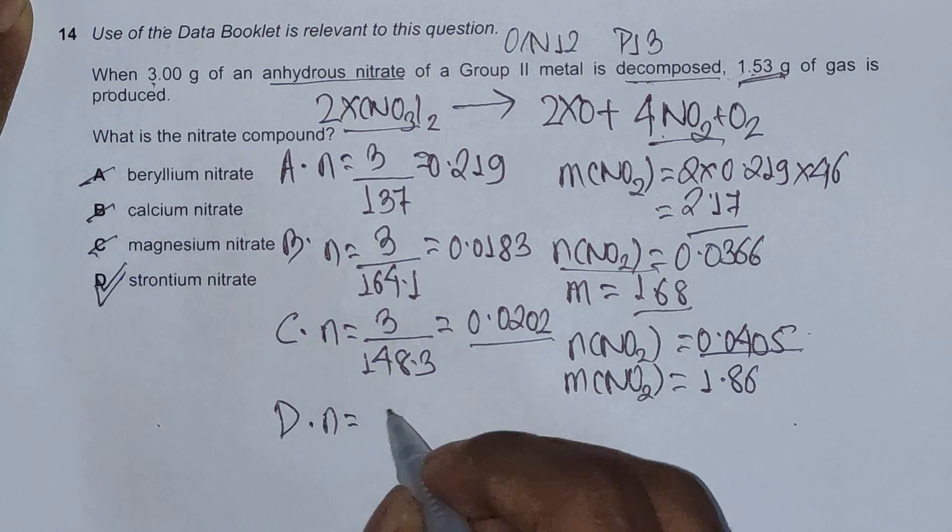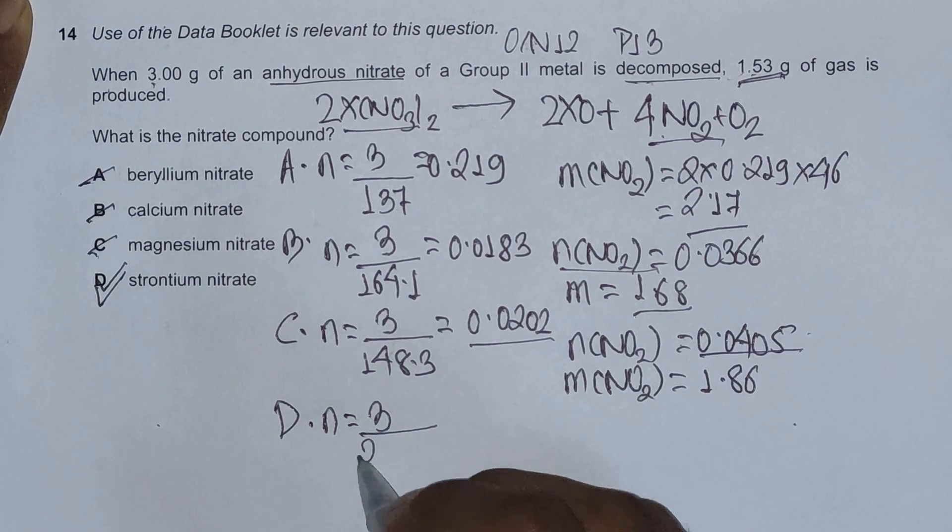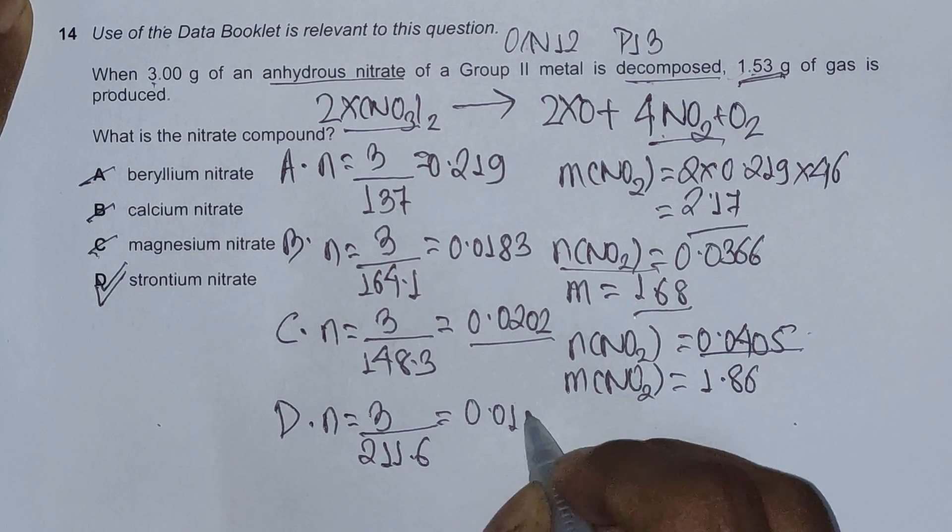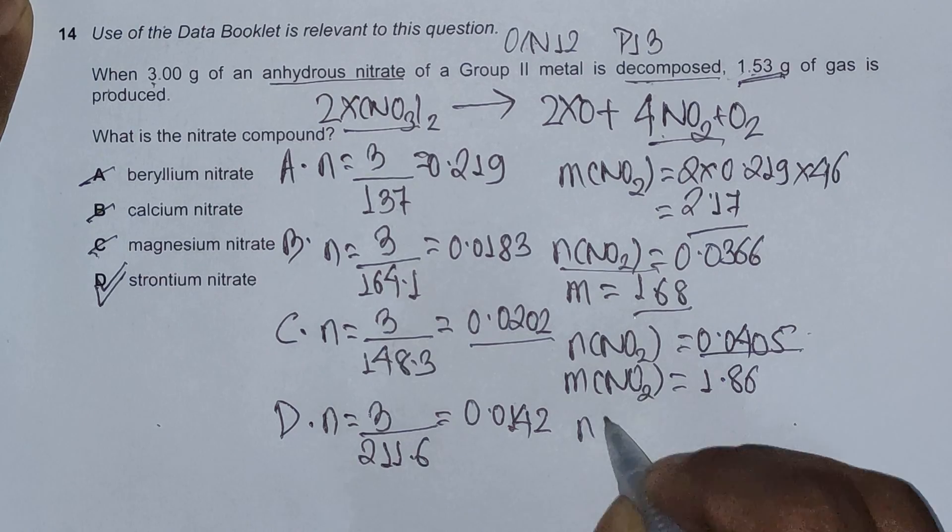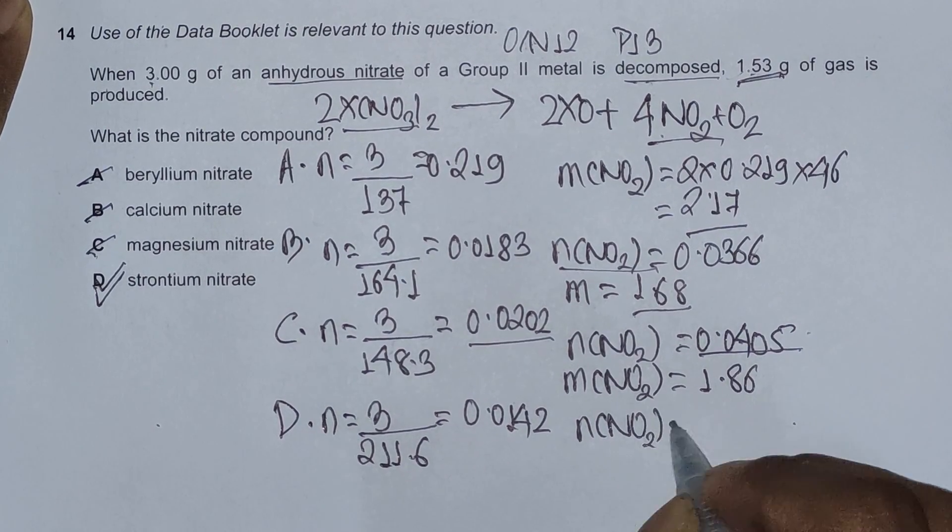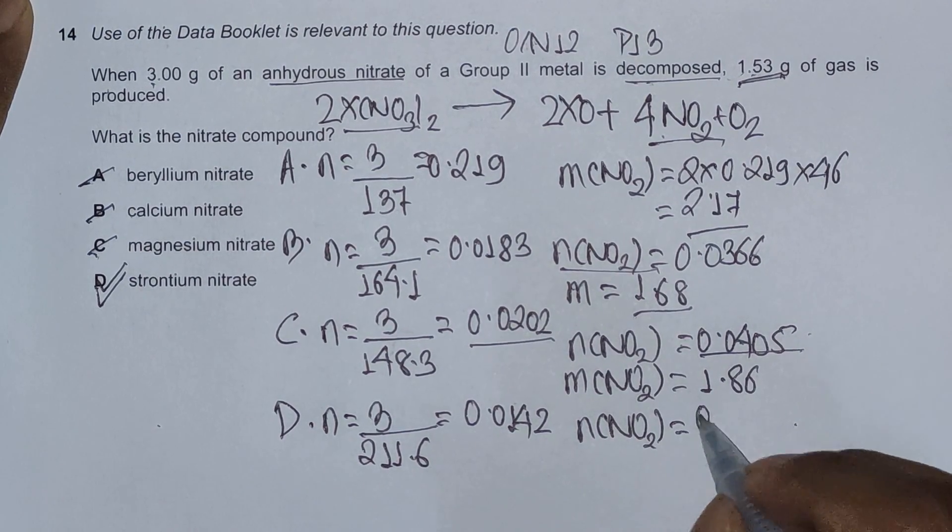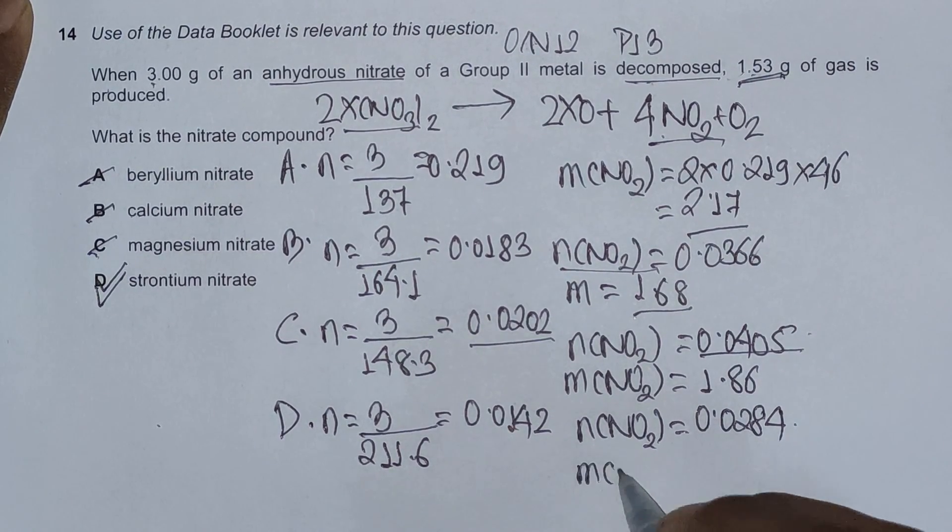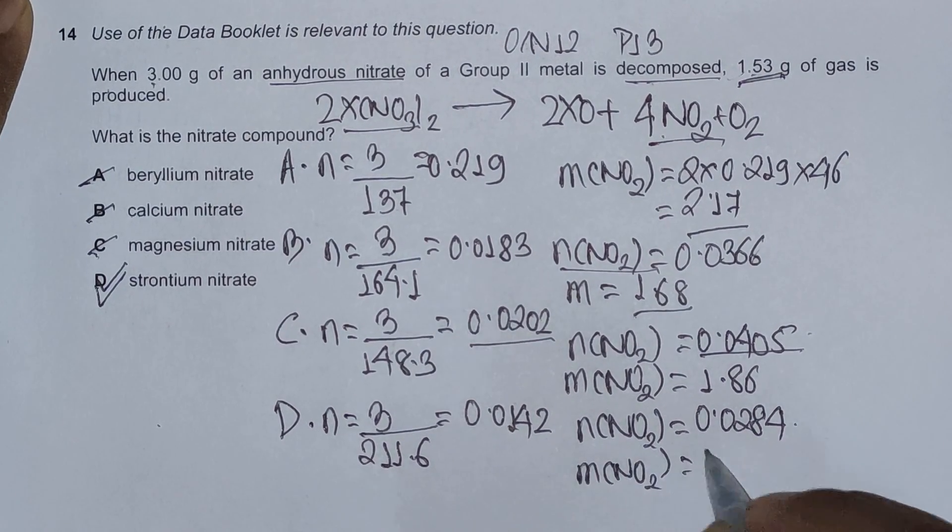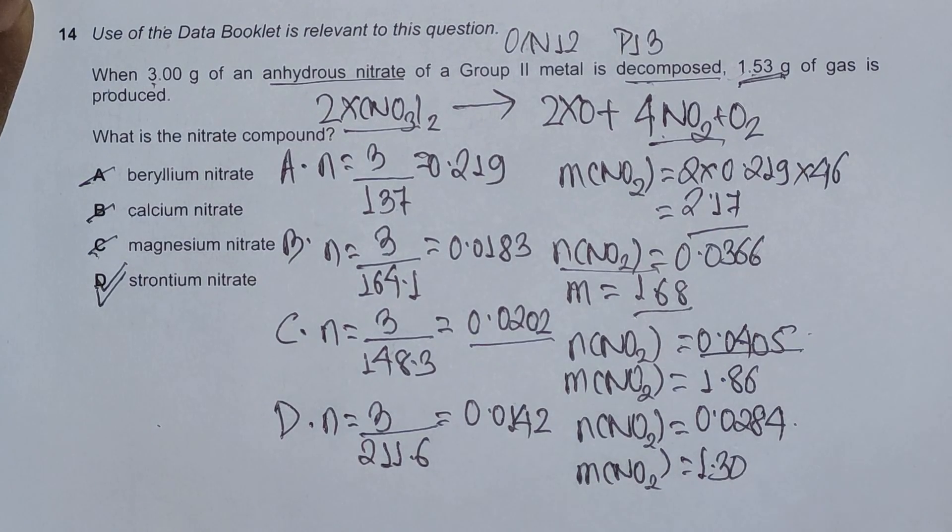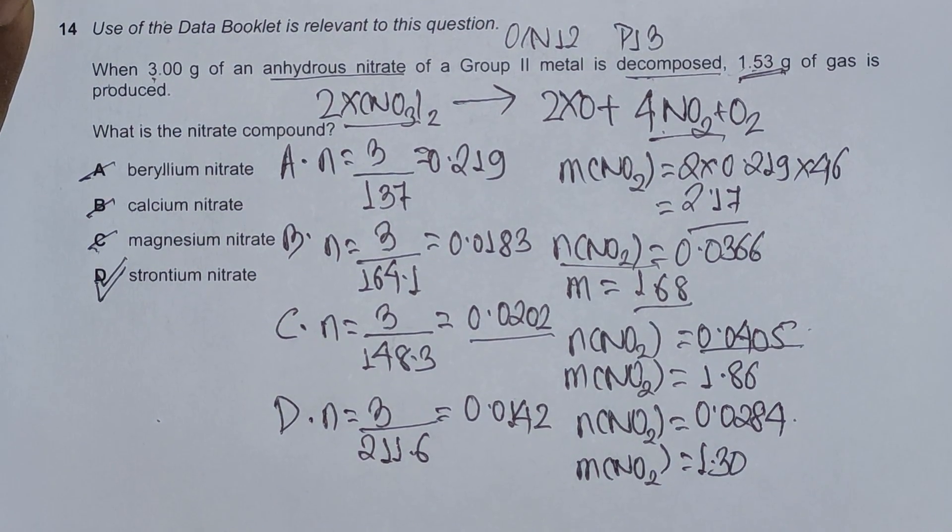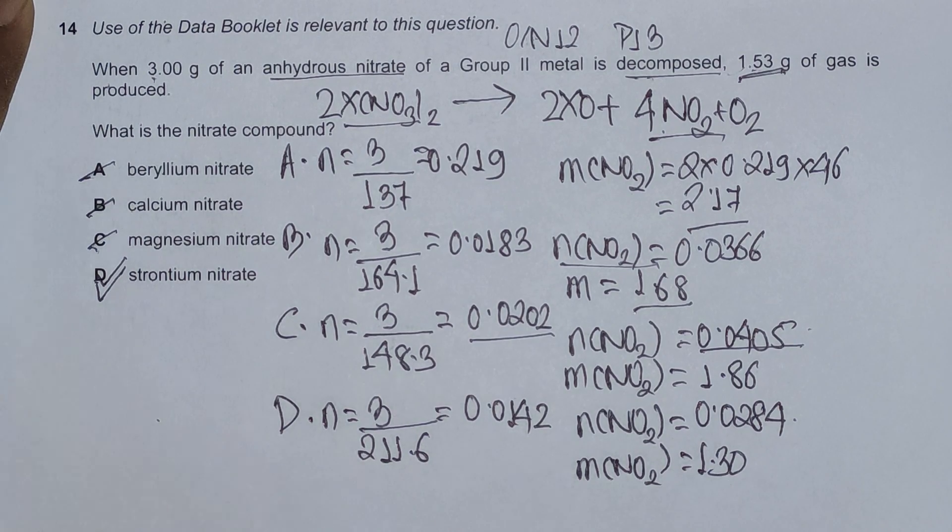Moles of strontium nitrate is 3 divided by 211.6, which is 0.0142. Again moles of nitrogen dioxide in this thermal decomposition would be 0.0284. Similarly, mass of nitrogen dioxide would be 1.30. Yes, we are going so far so good because 1.30 is less than 1.53, which means we should expect the mass of oxygen to be somewhere around 0.23.